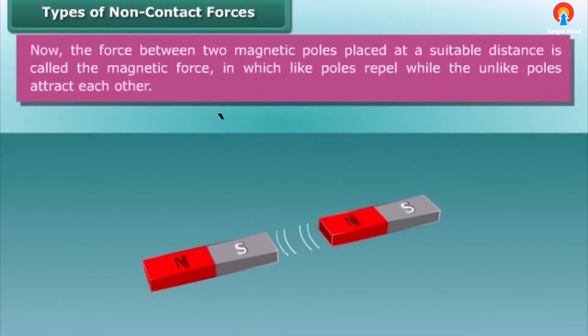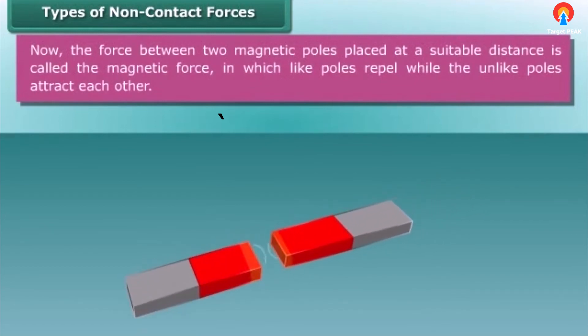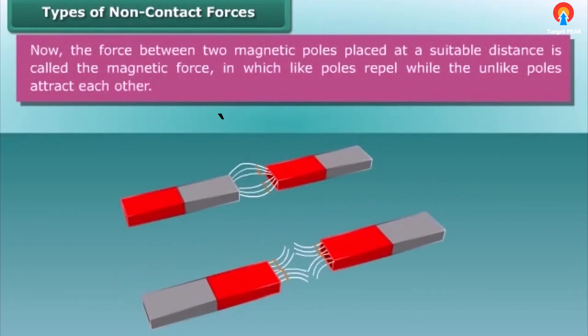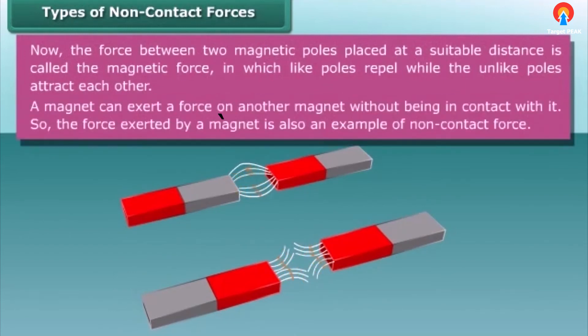Now, the force between two magnetic poles placed at a suitable distance is called the magnetic force, in which like poles repel while the unlike poles attract each other. A magnet can exert a force on another magnet without being in contact with it. So the force exerted by a magnet is also an example of non-contact force.